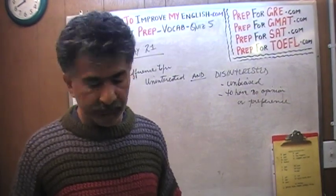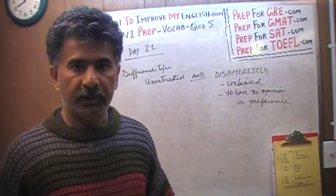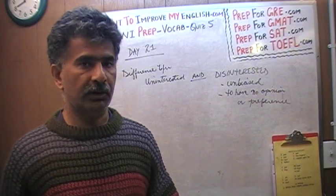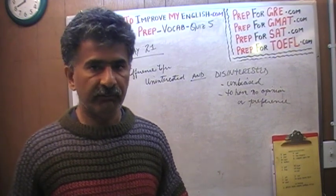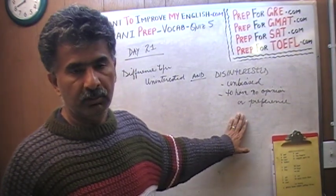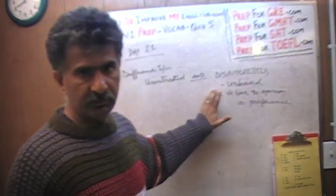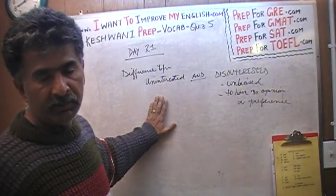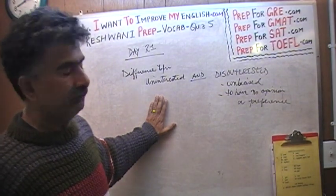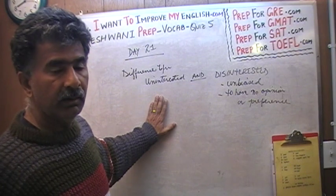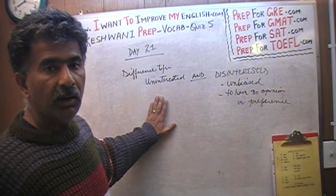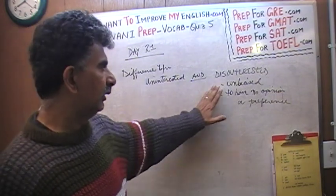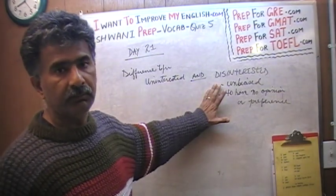The example I gave was the example of a judge in a courtroom. A judge is expected very much to be disinterested — to be unbiased in what is going on. But the judge must absolutely not be uninterested in what is going on; he is very much interested in what is going on. At the same time, he is disinterested.